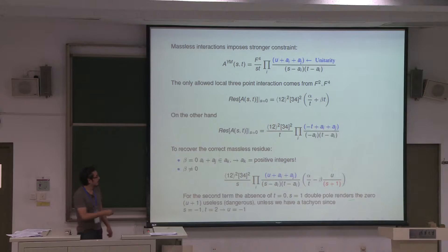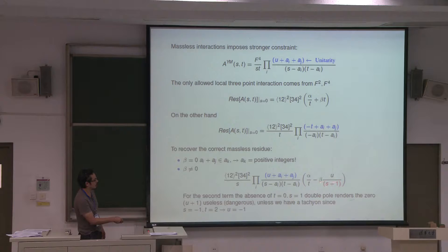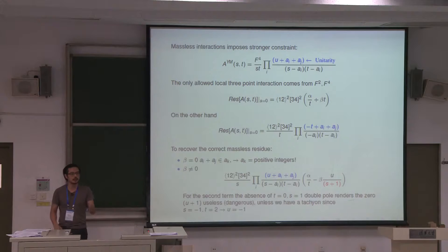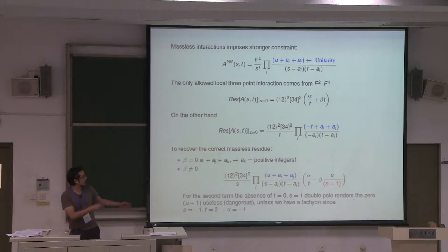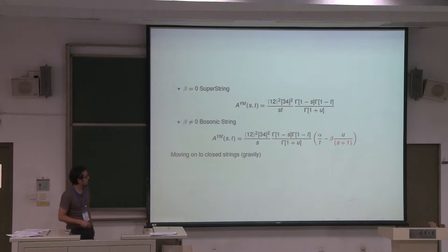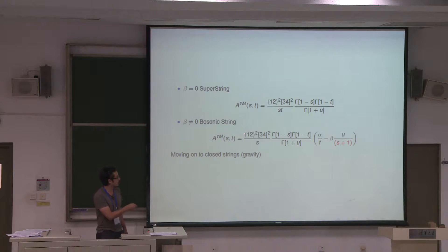If beta is not equal to zero, you have this extra term, which means there's a term without a T-channel pole. That means there's an excess of zeros which must be canceled by something in the denominator, and that actually forces you to have a tachyon. Once you set up your equation this way, the very presence of an F-cubed operator tells you that you must have a tachyon. So the two answers — with and without beta — are precisely the Yang-Mills amplitude of the superstring and the bosonic string amplitude.